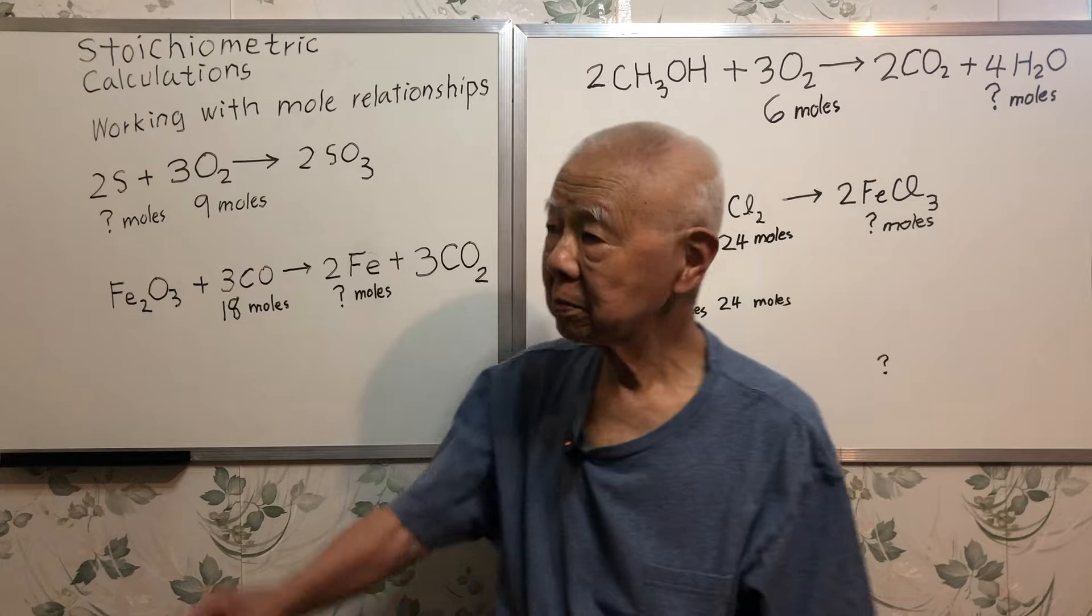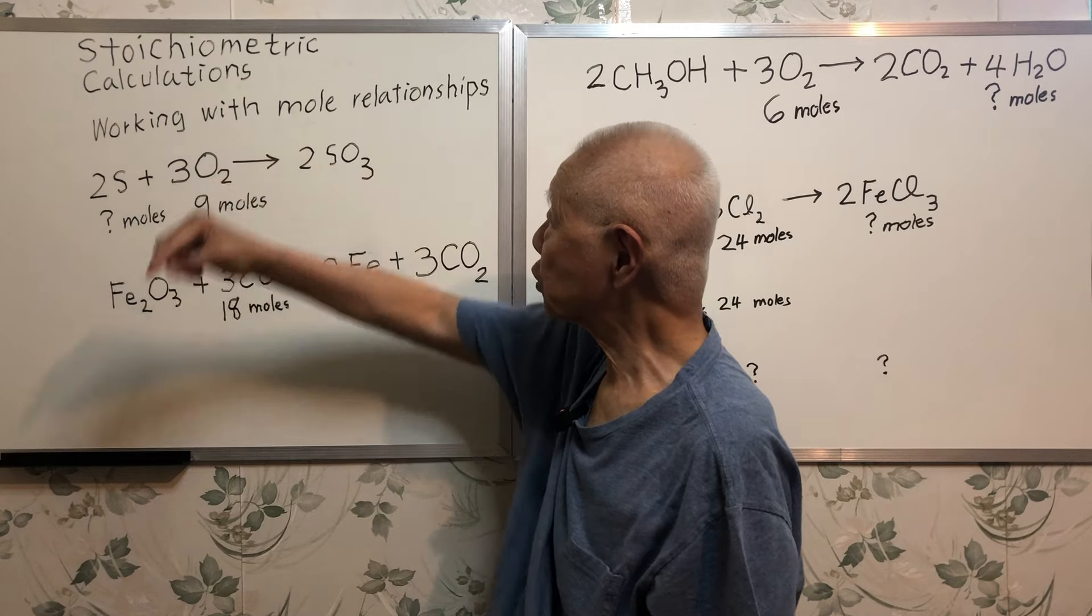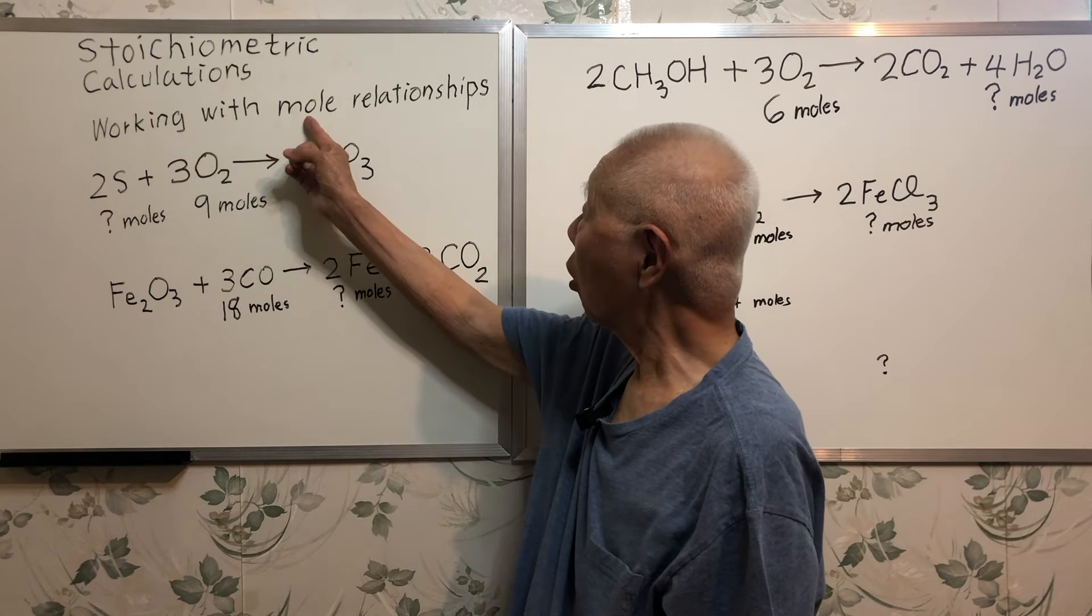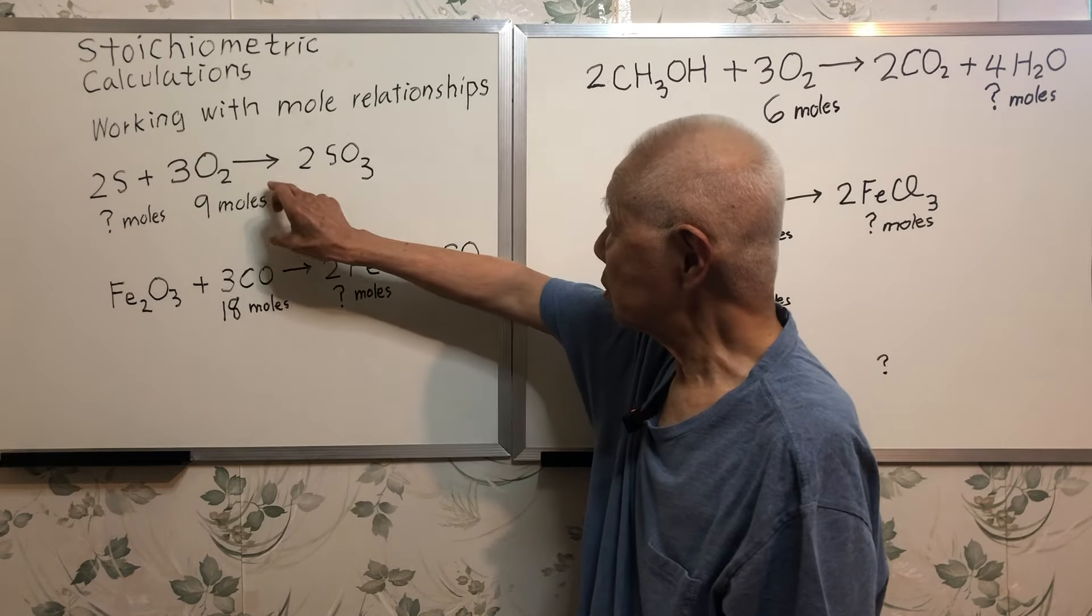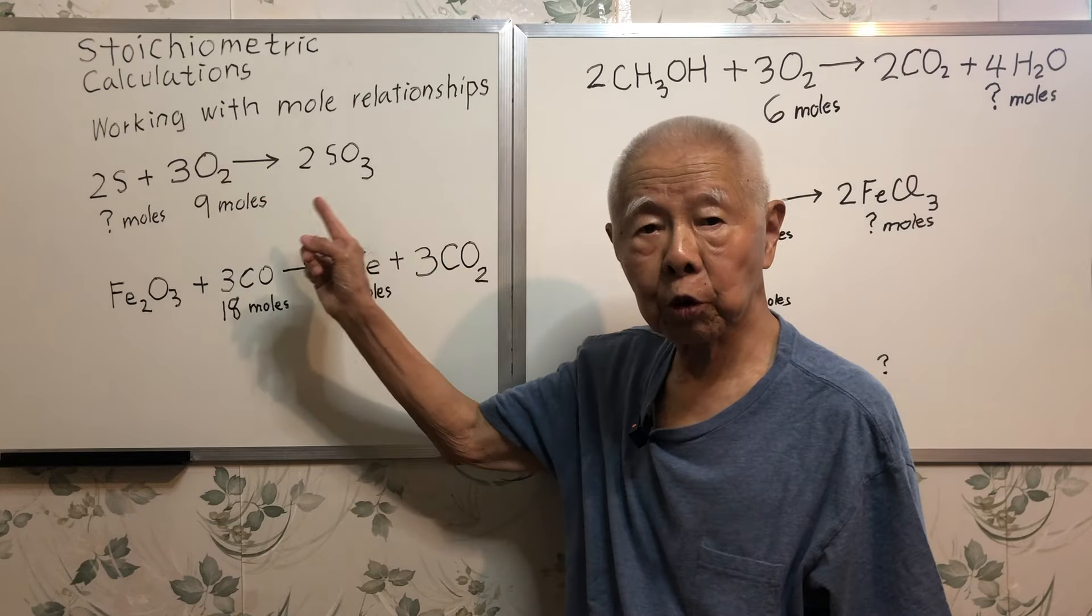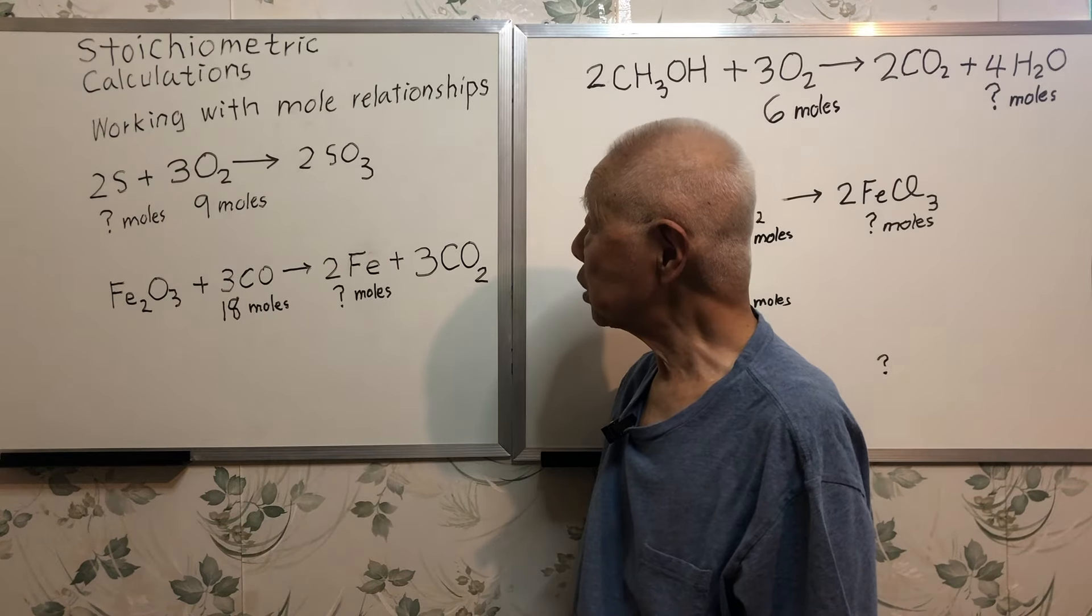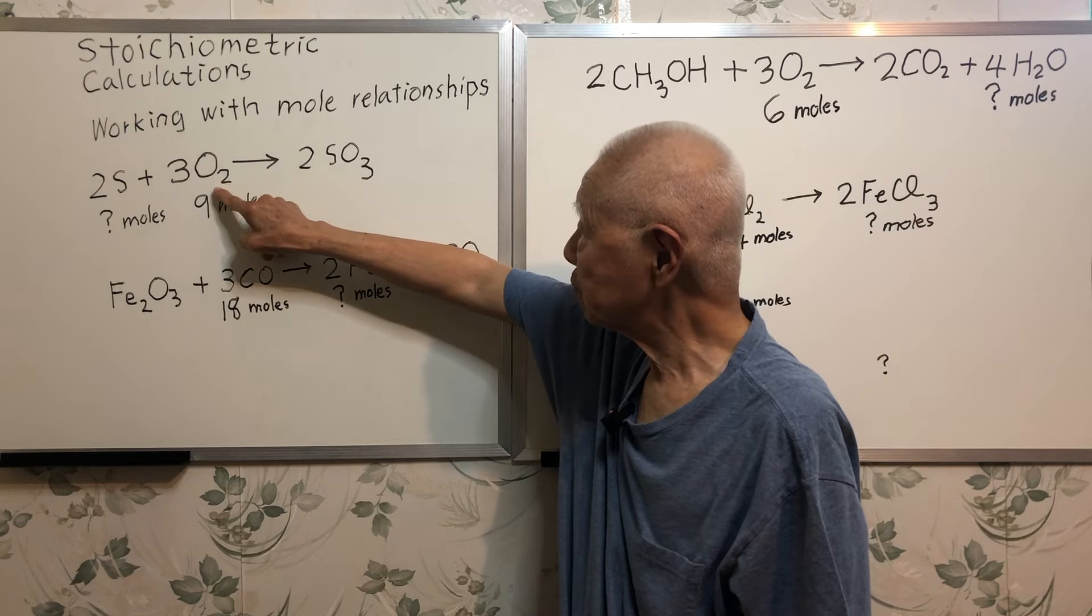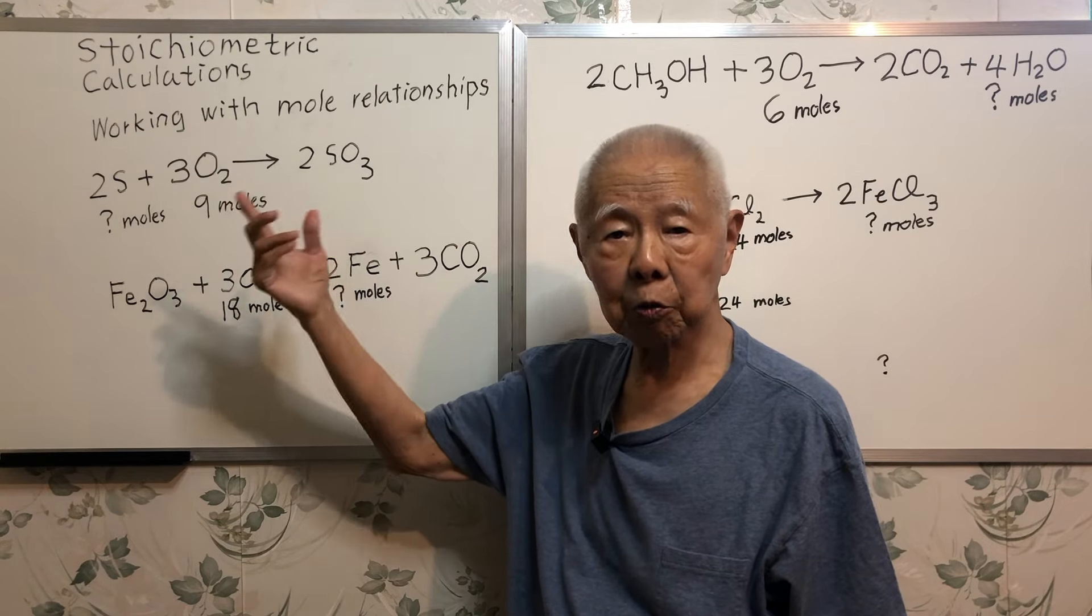It is called stoichiometric calculations and we are only working with mole relationships. This question, the reaction equation is given and it is a balanced equation. The question is I have nine moles of oxygen. How many moles of sulfur I need in order to perform this reaction?